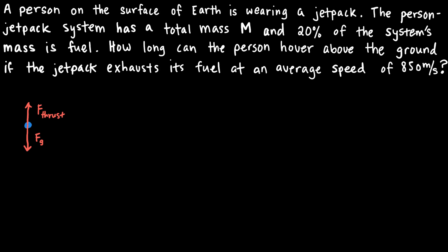One way to write the condition for hovering is to say the upwards direction is positive, and when the force of thrust minus the force of gravity equals zero, those two forces are equal and opposite and the system simply hovers. So the hovering criterion is: the thrust force equals the gravitational force.